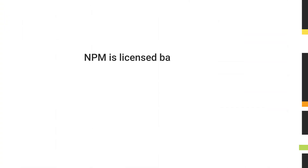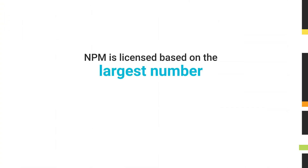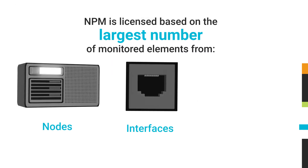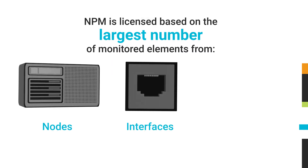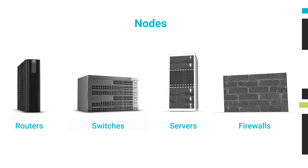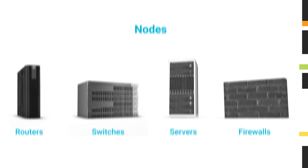NPM is licensed based on the largest number of monitored elements from one of these three categories: nodes, interfaces, or volumes. Nodes include entire devices such as routers, switches, virtual and physical servers, and firewalls.